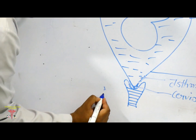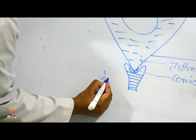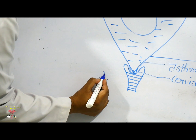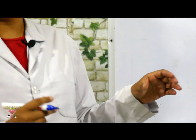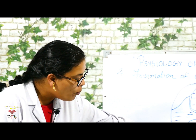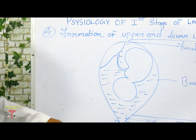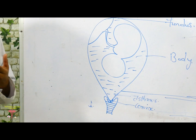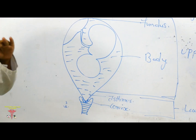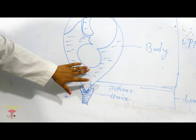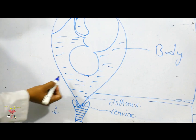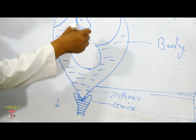The cervical canal, which was tightly closed, slowly and gradually opens. This gradual opening is called cervical dilatation. As the cervical canal opens and is taken up, it allows the presenting part — the fetal head — to descend downward.